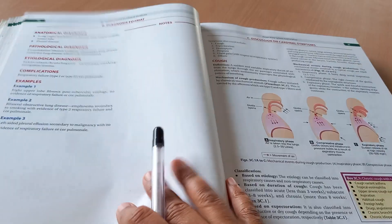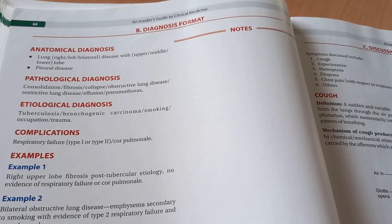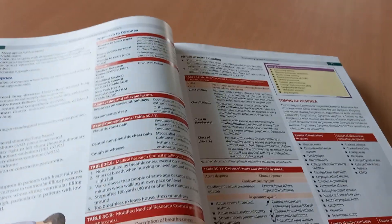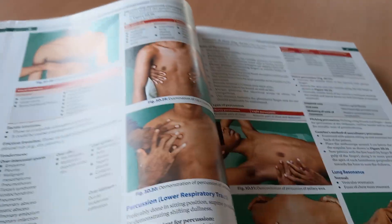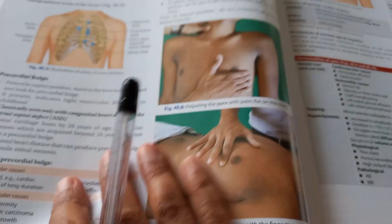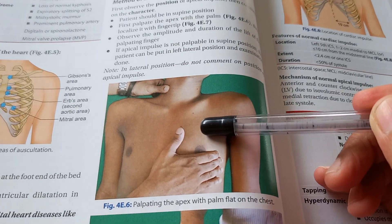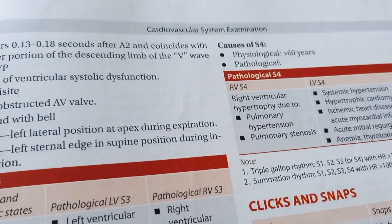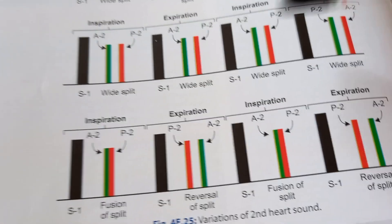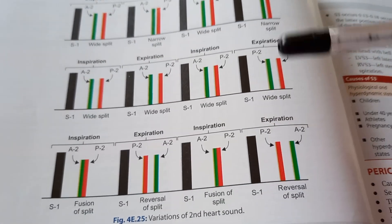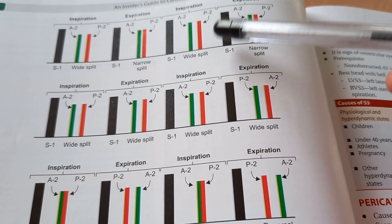I felt like it's a handy book. So what are they checking here? The apical impulse — palpating the apex. This becomes the cardiovascular system. And what are they trying to depict here? S1, S2. They are showing you the variation in the second heart sound — wide split, narrow split, wide split, narrow split.